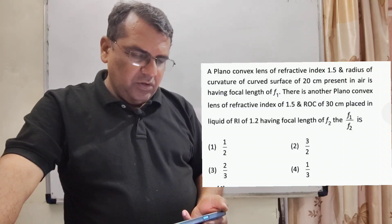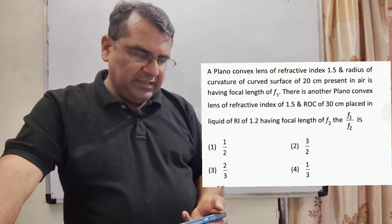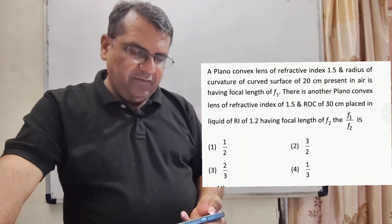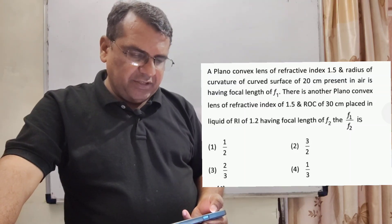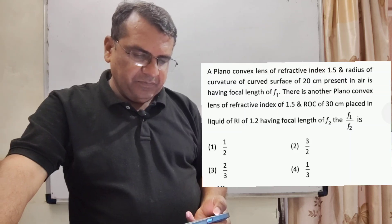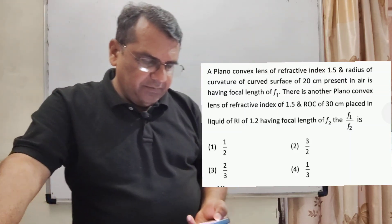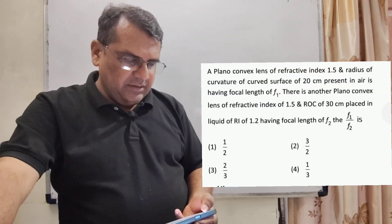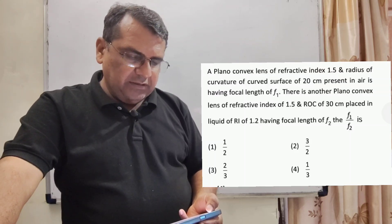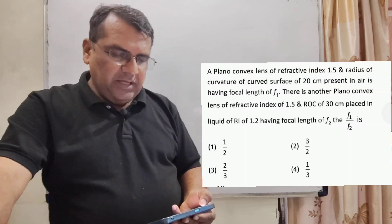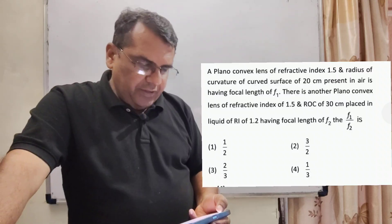There is another plano convex lens of refractive index of 1.5 and radius of curvature of 30 cm placed in liquid of refractive index of 1.2 having focal length of f2.